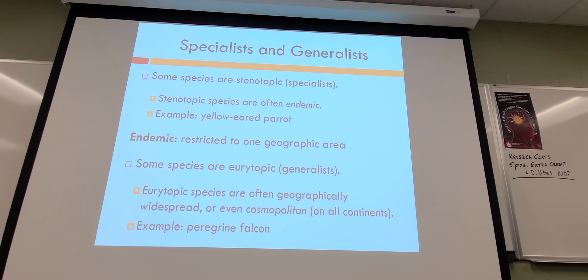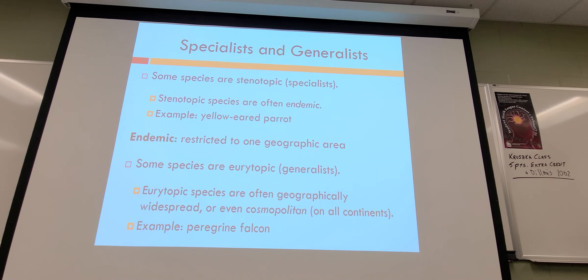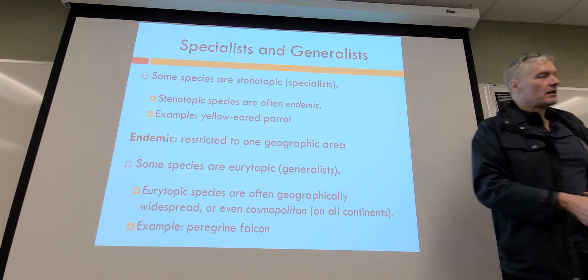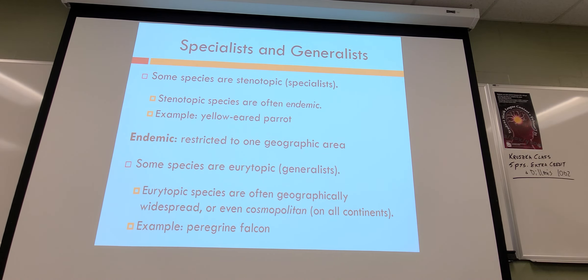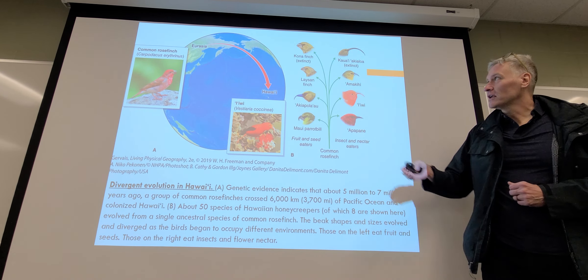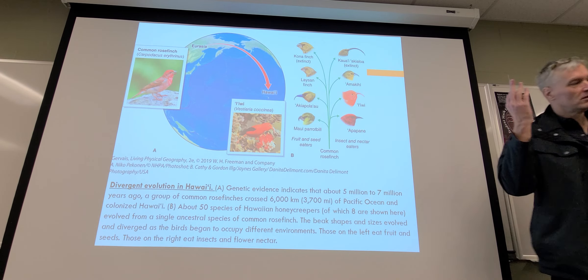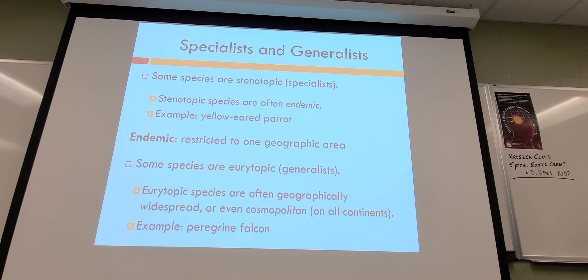Species are either generalists or specialists. Generalists tend to do better when moving into different zones — they can consume a larger range of things and are sturdy across a larger range of environments. A specialist is more vulnerable: the more specialized something is, the more it's tied to a small area. For example, if a bird eats just one specific bug and something happens to that bug, that's detrimental to the species. In environments with long-term stability, a species can live that way for a very long time, but it's vulnerable if it has that small a niche.